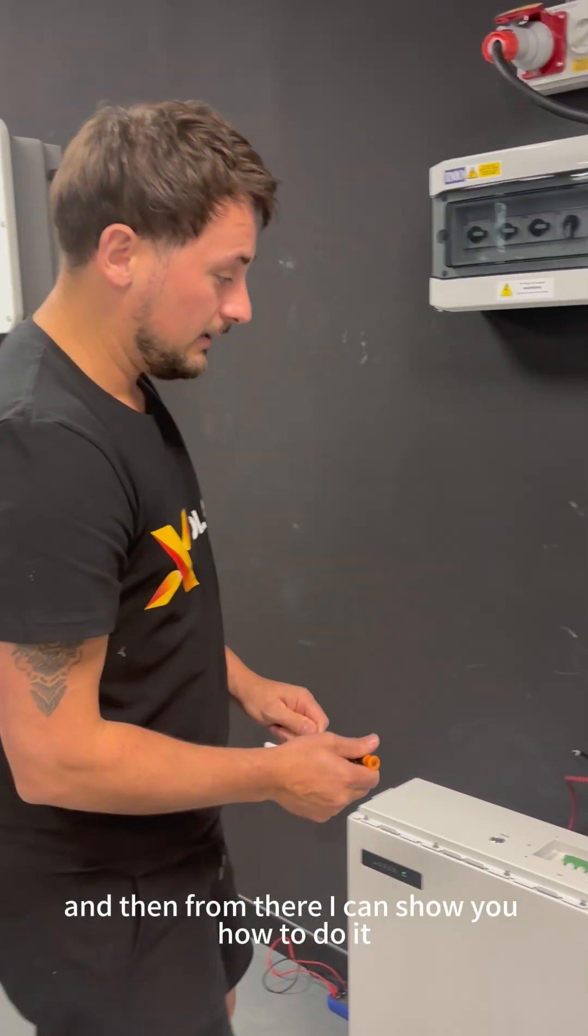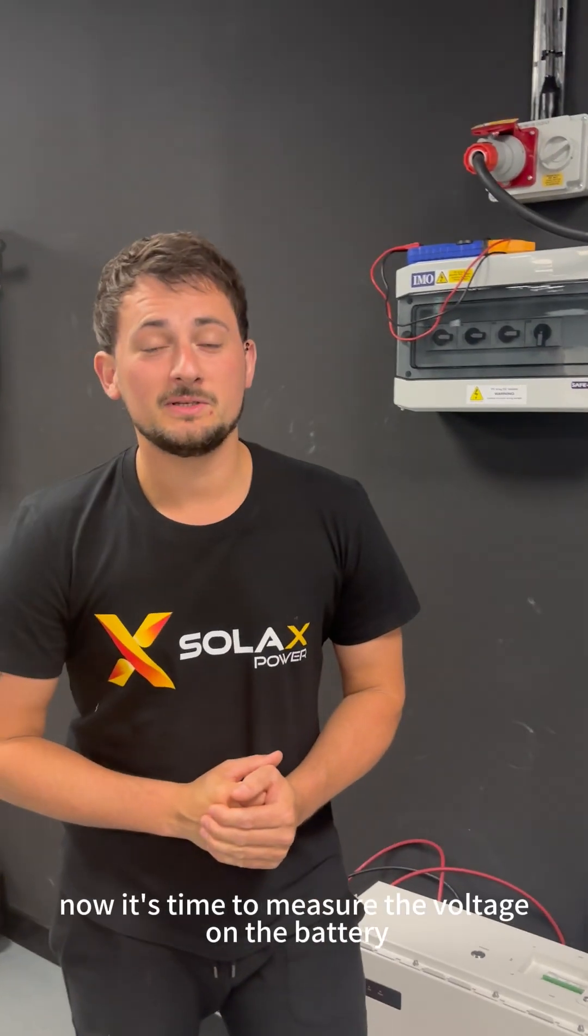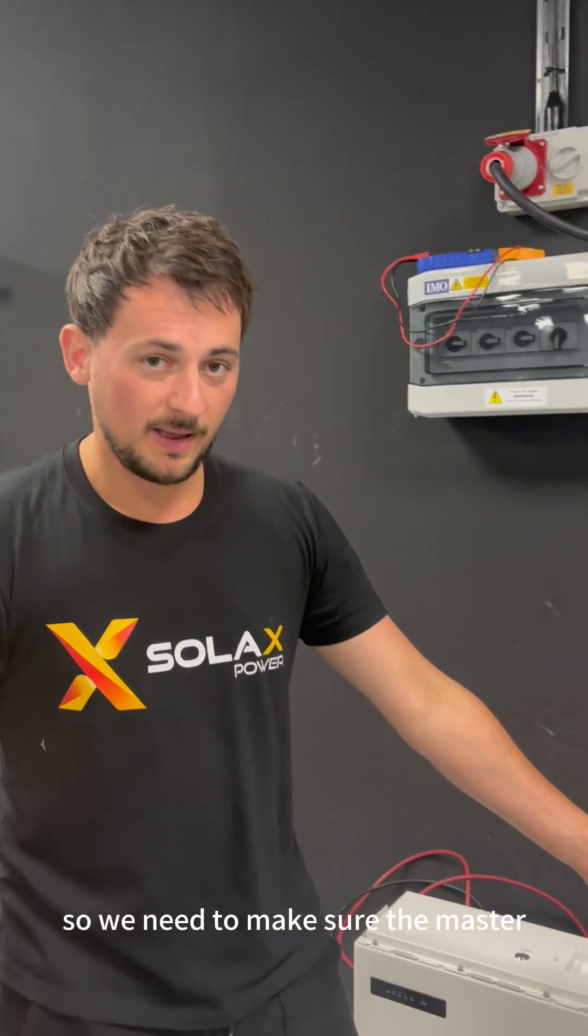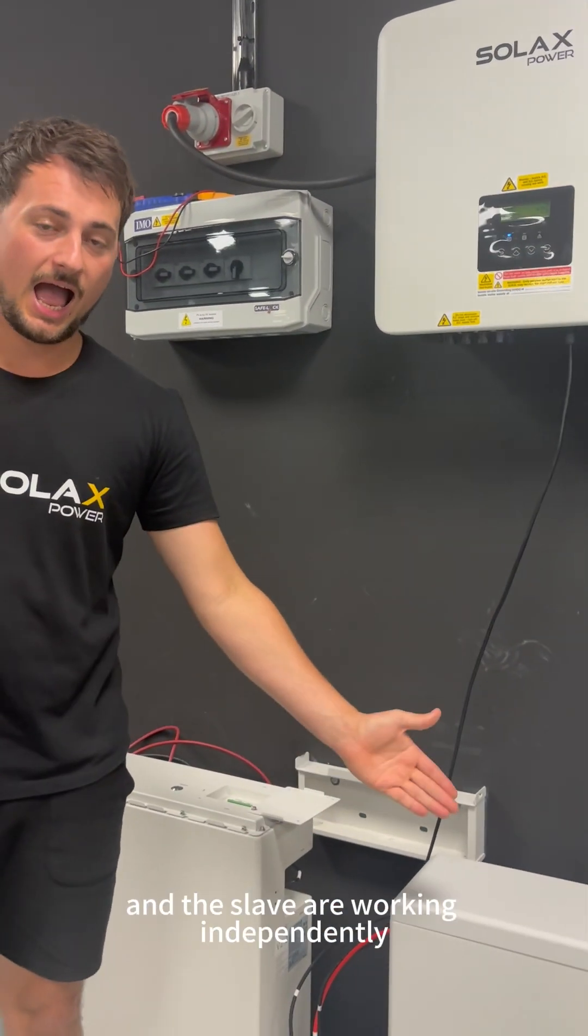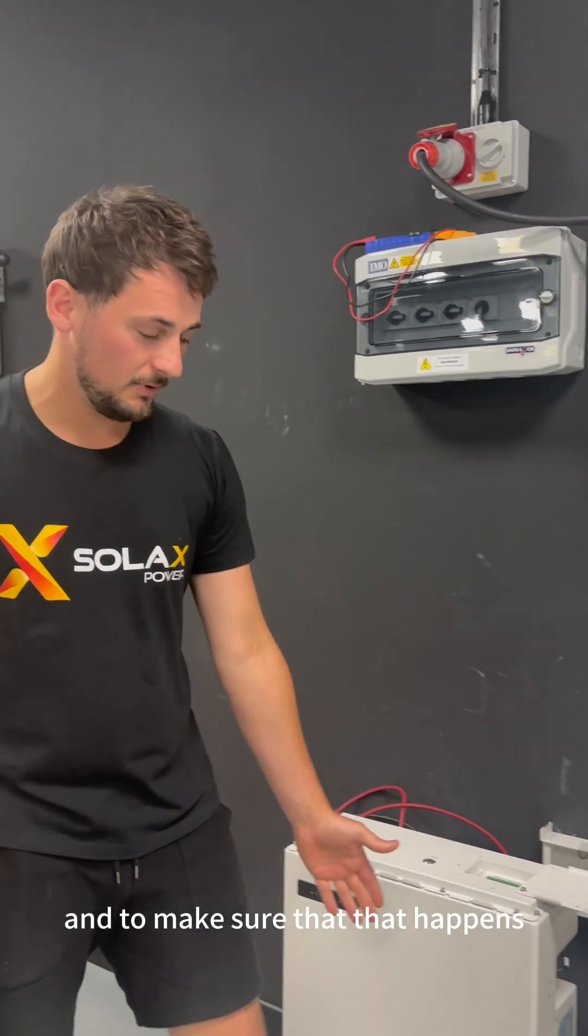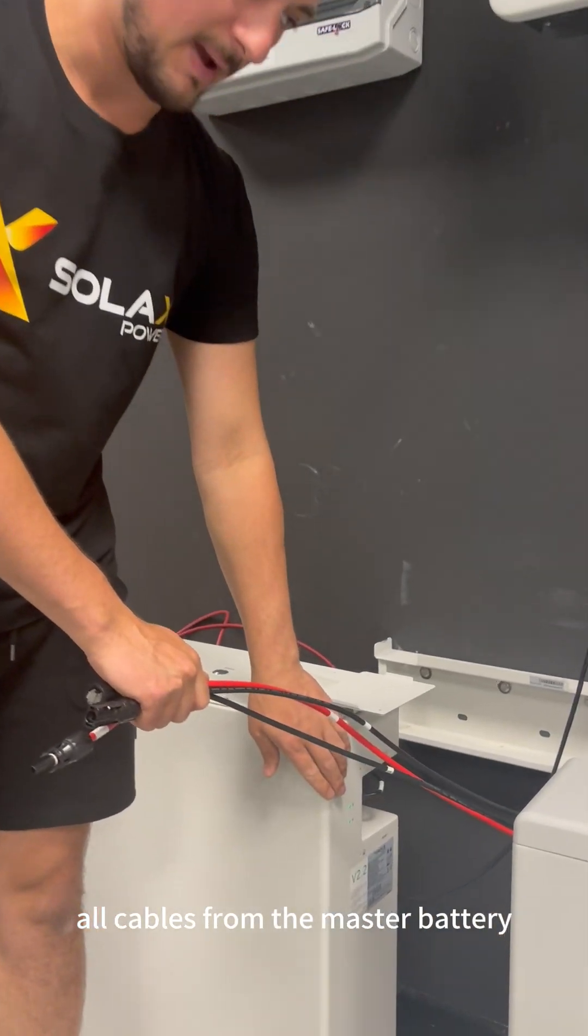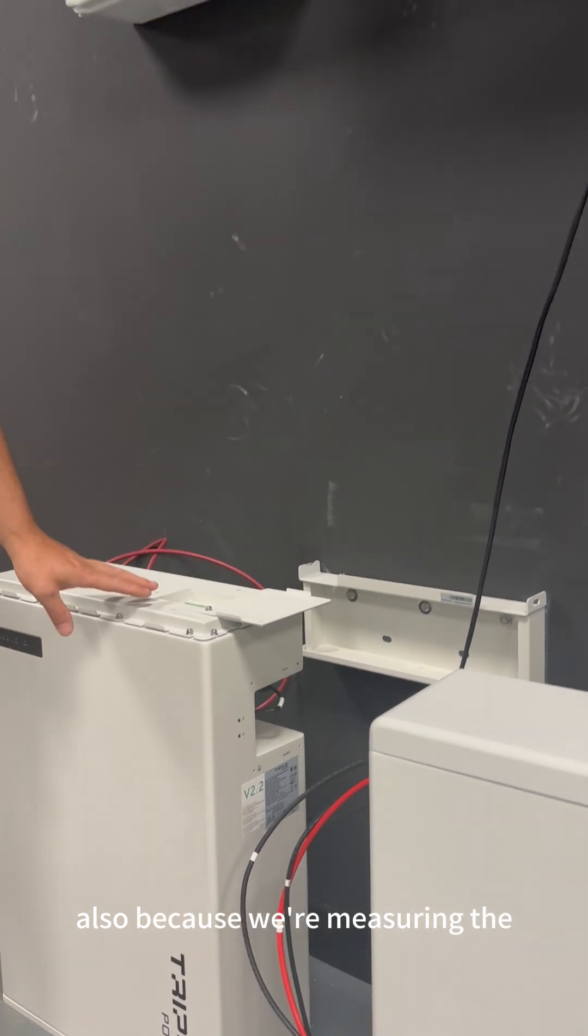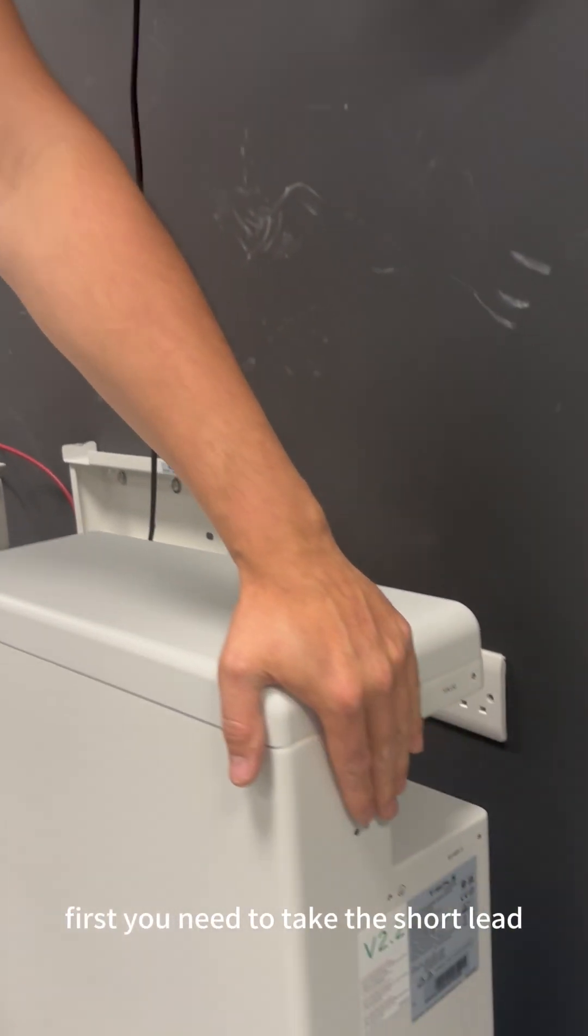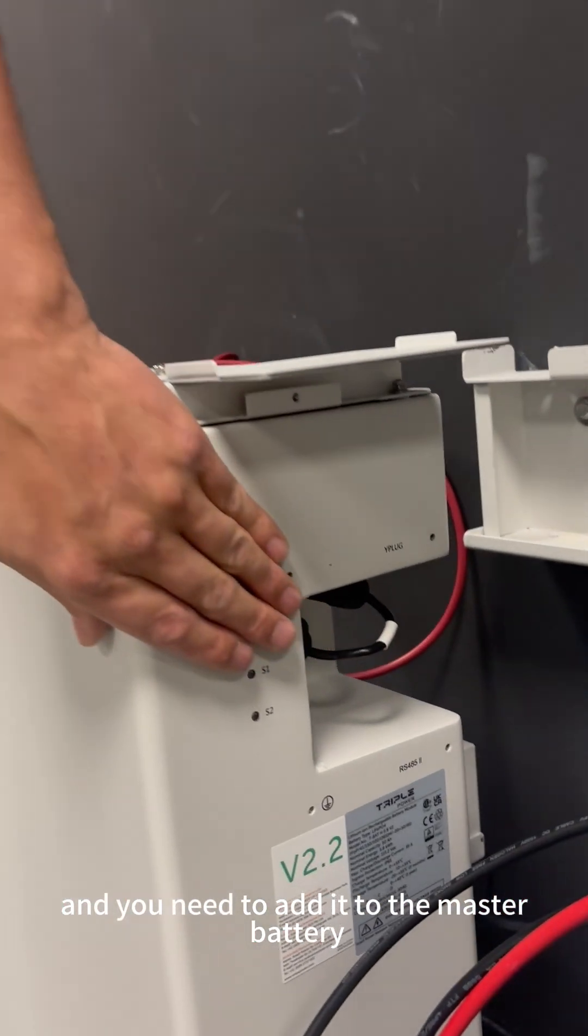Now it's time to measure the voltage on the battery. We need to make sure the master and the slave are working independently. To make sure that happens you need to disconnect all cables from the master battery because we are measuring the voltage on the master battery first. You need to take the short lead out of the slave battery and you need to add it to the master battery.